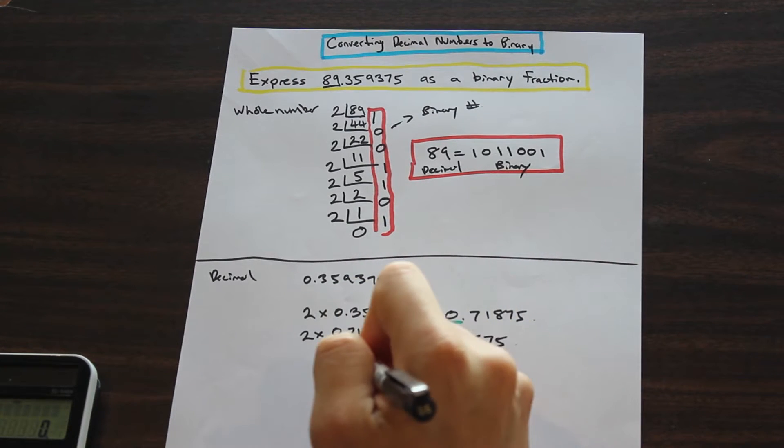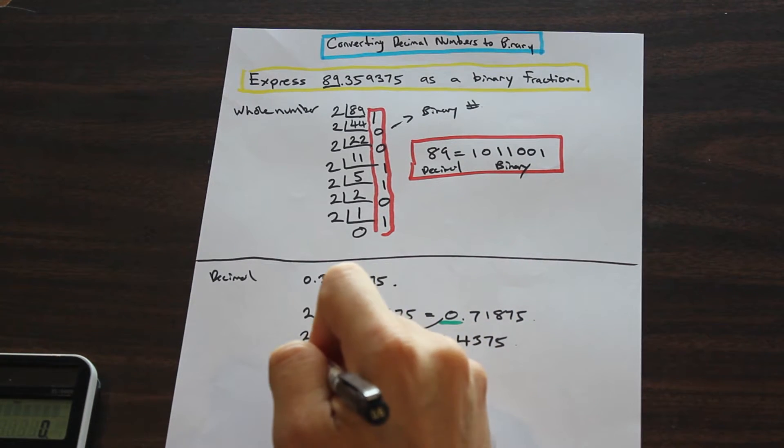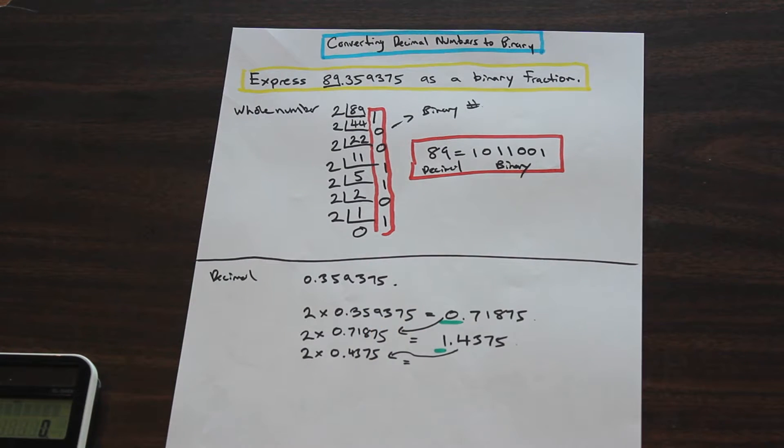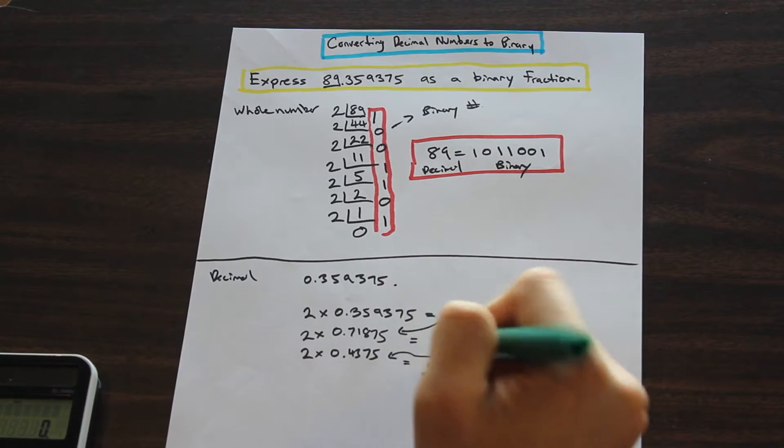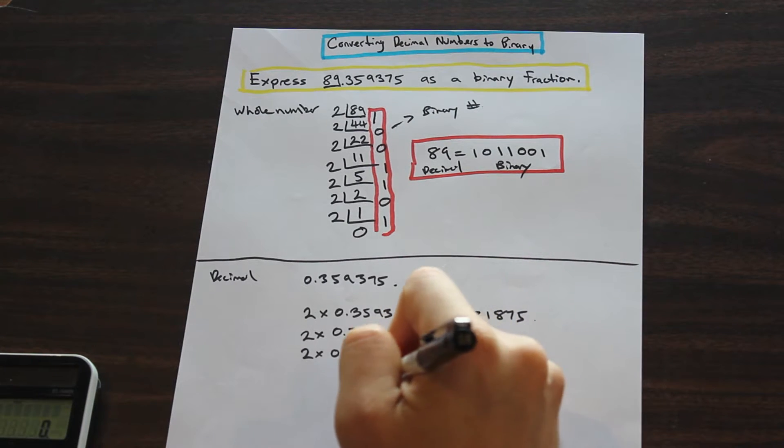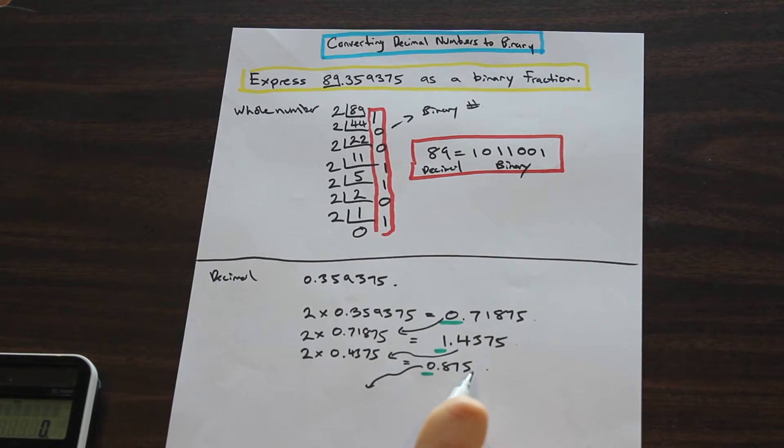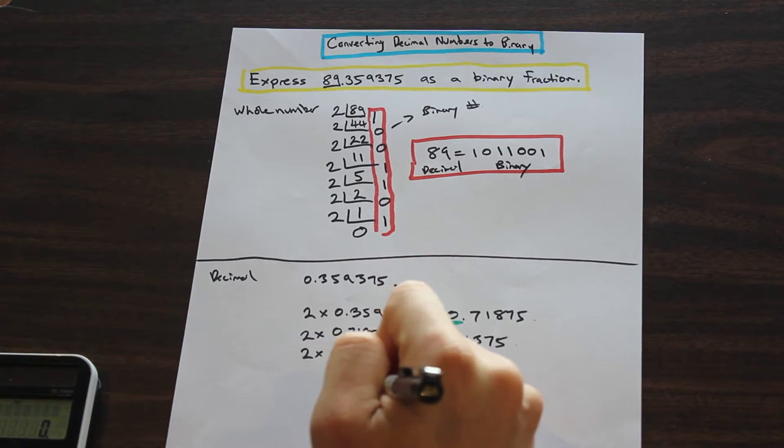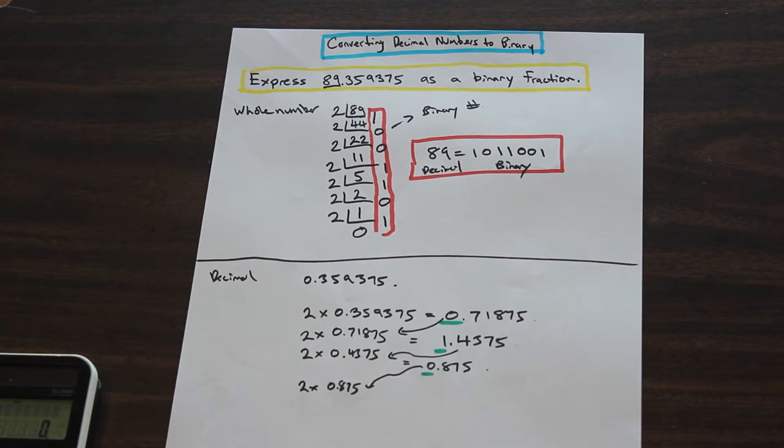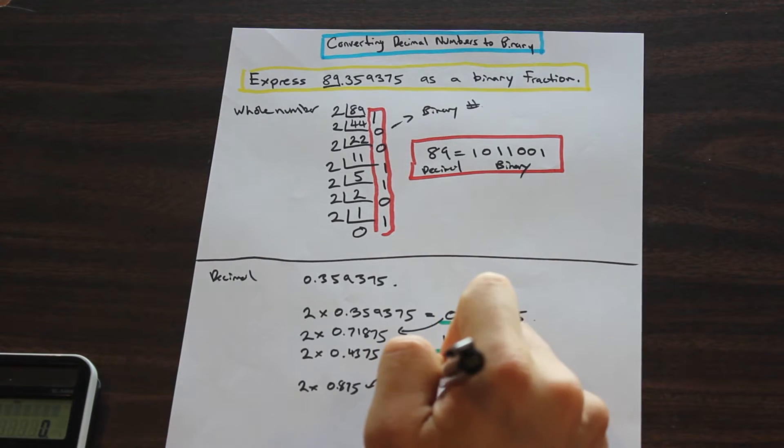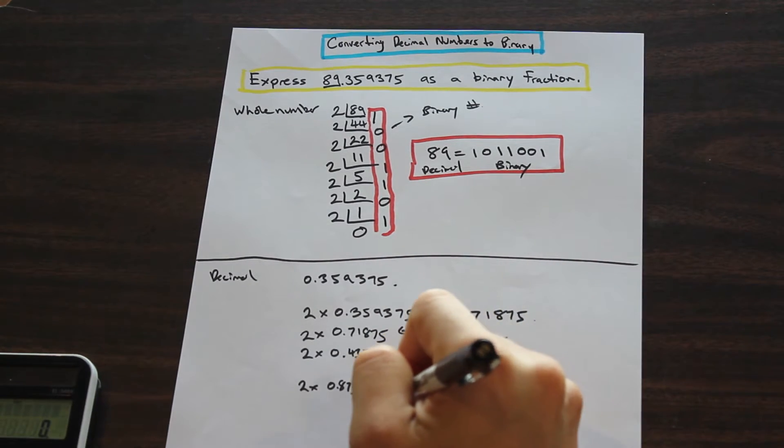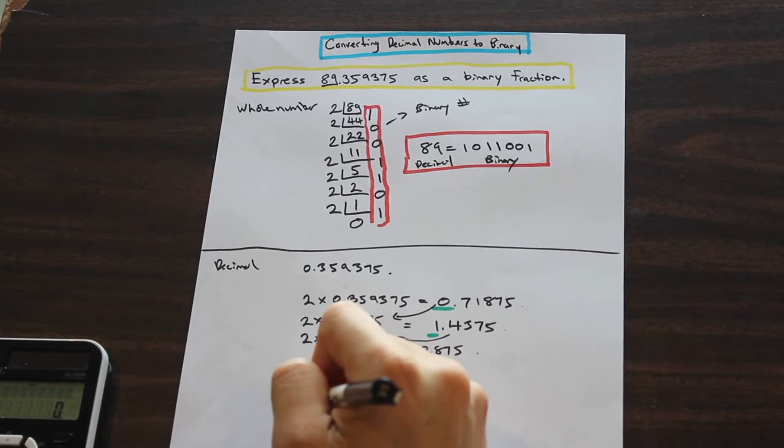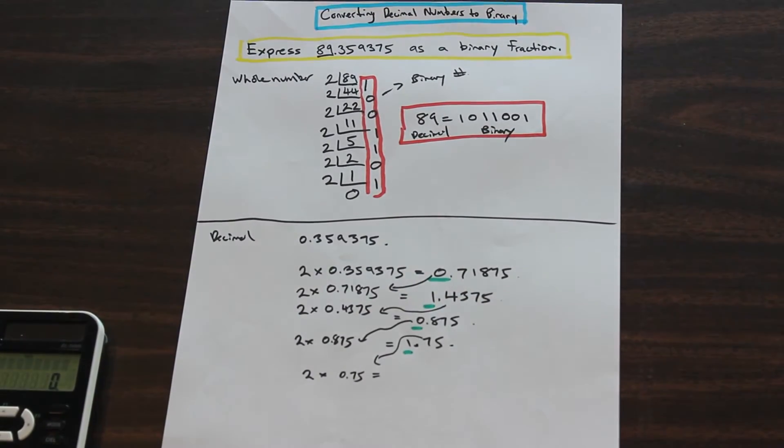So we have 0.4375 times 2. That is equal to 0.875 now. We're going to reserve that number there. Take that down. That's 0.875, so we'll take the whole thing. Multiply by 2 there. We are going to get 1.75. Reserve the 1. Take the 0.75, move it down here. Multiply by 2, and we're just going to repeat this process until we get 1.